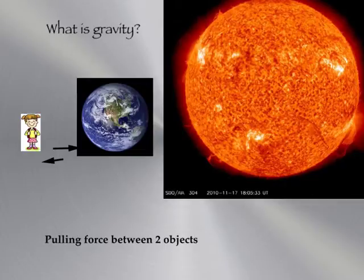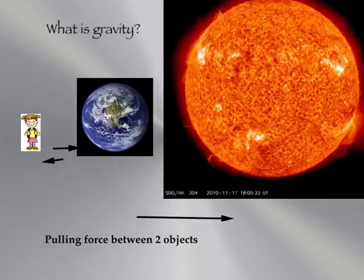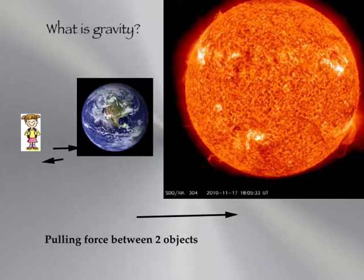And if we have a larger object, like the sun, the sun also pulls on the earth, but with a much larger force, because it is a much larger object. The earth is pulling on the sun as well, but not with as much force, because it is a smaller object.